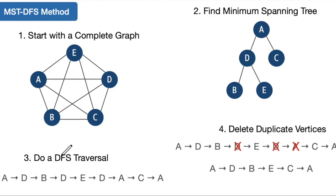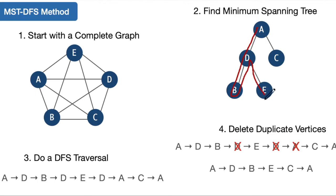So we have our minimum spanning tree. The next step is to do a depth first search traversal. I have a separate video on DFS, so I won't cover it in detail here. We start at our root node A, we descend down the tree — hence the term depth first. We continue down, and when we get to the bottom we work our way back up, then descend down the other branch. We're going down the tree first and then across.